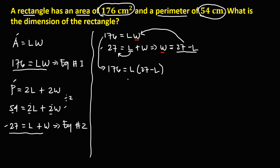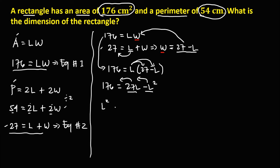Substituting W = 27 minus L into the first equation and simplifying: 176 equals L times (27 minus L), which gives 176 equals 27L minus L squared. Since we have a negative L squared, we transpose both terms to the left side, giving us L squared minus 27L plus 176 equals 0.